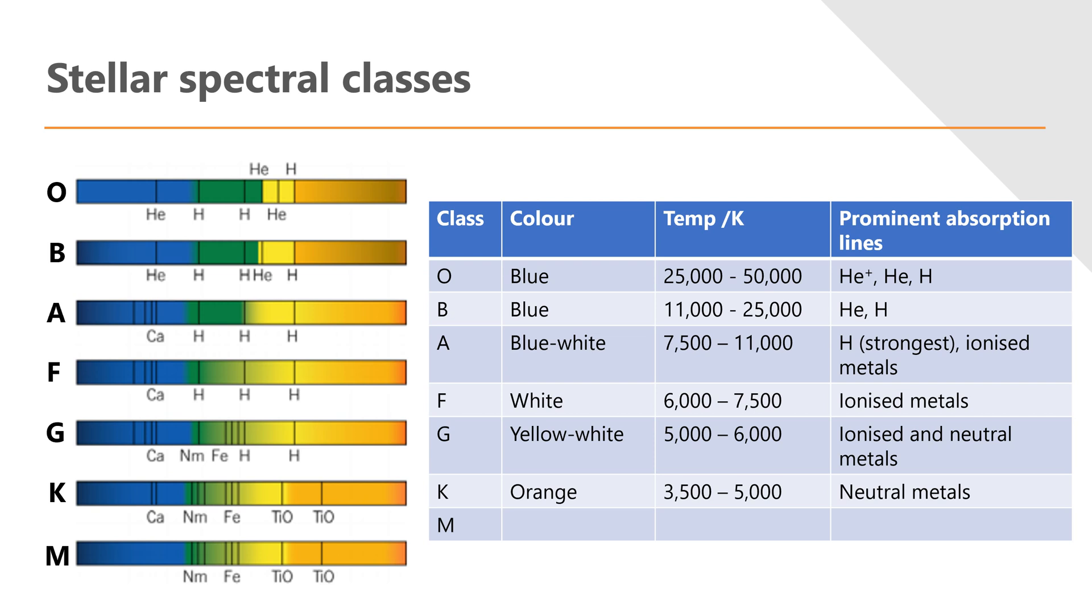Go to our K class stars, we get mainly neutral metals, all the way down to our M class stars where we get neutral atoms and things like titanium oxide. So we start to see compounds being formed, or we start to see more complex things. The lower the temperature, the more stuff there is in the absorption lines of our stars.